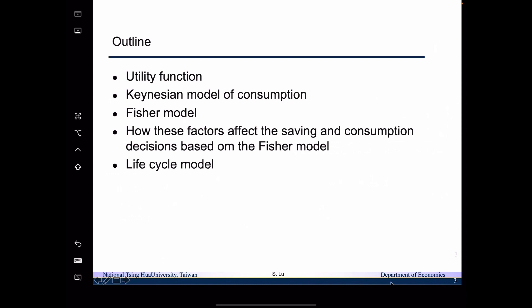After that, we are going to move on to talk about the Fisher model, which is a two-period model. In this model, we will need all the elements we developed earlier: the utility function, intertemporal budget constraints, and then we will be able to come up with the decision for consumption and savings. We will also look at how factors affecting the intertemporal budget constraints affect the consumption and savings decisions.